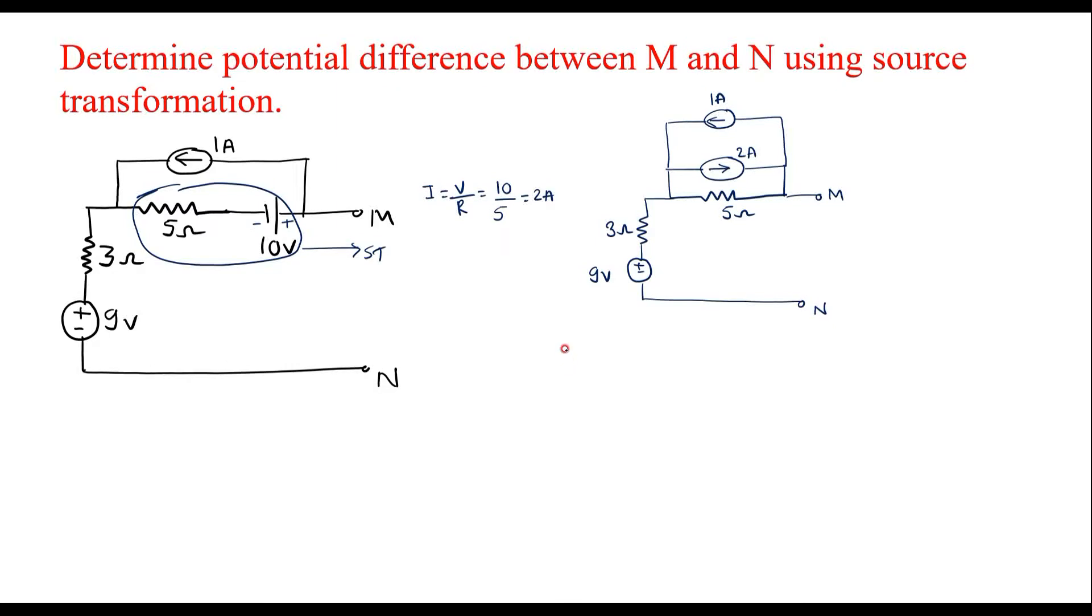I will draw here. This is 1 amp. Direction should be with respect to highest magnitude, like this. And this 5 ohm resistor is connected as it is in parallel to this. This 3 ohm and 9 volt are connected as it is.